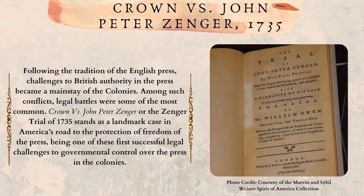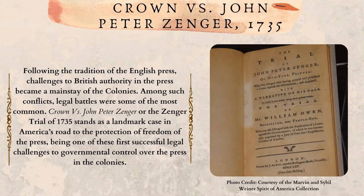Crown versus John Peter Zenger, 1735. Following the tradition of the English press, challenges to British authority in the press became a mainstay of the colonies. Among such conflicts, legal battles were some of the most common. Crown versus John Peter Zenger, or the Zenger Trial of 1735, stands as a landmark case in America's road to the protection of freedom of the press, being one of the first successful legal challenges to governmental control over the press in the colonies.